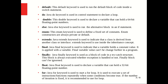Inside the switch statement we have different cases, and at the end we use default. The do keyword is used in control statements to declare a loop. The double keyword is used to declare a variable that can hold a 64-bit floating point number. The else keyword is used to run the alternative block in an if statement when the if condition is not satisfied. The enum keyword is used to define a fixed set of constants — enum constructors are always private or default.